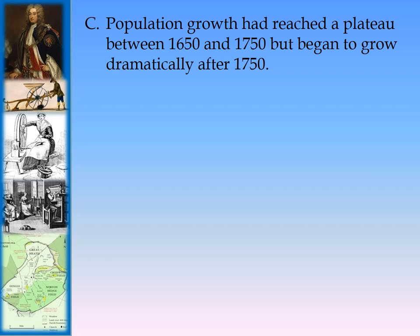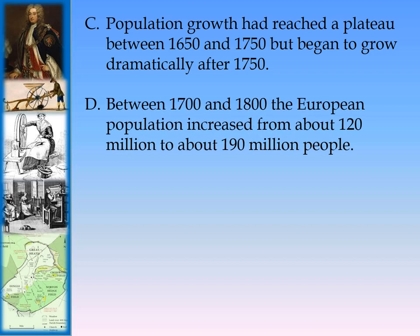Population growth had reached a plateau between 1650 and 1750, but began to grow dramatically after 1750. Between 1700 and 1800, the European population increased from about 120 million to about 190 million people — an increase of about 70 million.